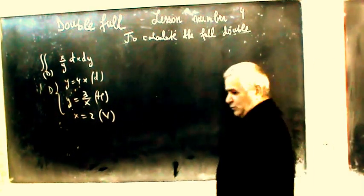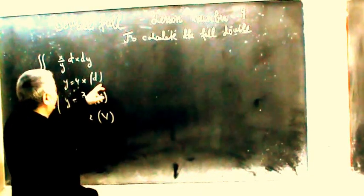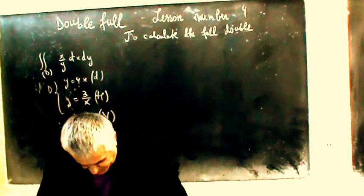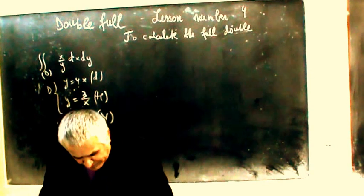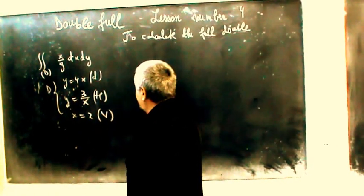Double integral lesson number four: calculate the double integration domain of x divided by y, dx dy. The differential x divided by differential y domain integration is y equal to 4x, and dy equal to 3 divided by x — an explicit equation of a hyperbolic, where x equal to vertical.